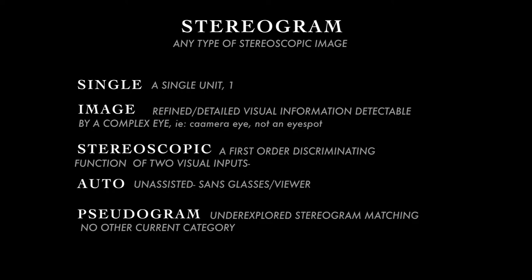To define what it actually means, I try to break it down. A stereogram, of course, is any type of stereoscopic image. Single is one unit. An image here means a complex visual eye — something like a camera eye, not just an eye spot that's detecting light — because any animal using image-forming eyes always has two eyes or a pair of eyes, never an odd number. And stereoscopic means there is a first-order discriminating function of the two visual inputs. Stereoscopic doesn't necessarily mean it's a correspondence of images formed in the brain — it's actually in the retina, and the visual images later form in the brain, so the stereoscopic action happens before the visual information actually gets processed.